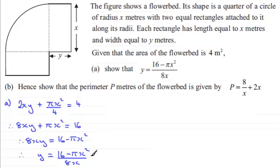Okay, so that's part A. Now we just need to do part B, and for part B we've got to show that the perimeter P meters of the flowerbed is given by this equation here. Well, to get the perimeter, all we need to do is sum the lengths around the outside of the shape.